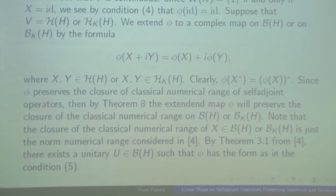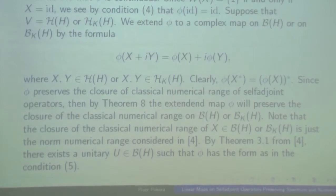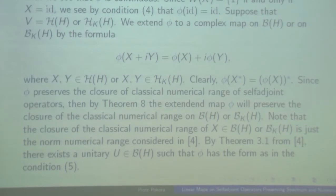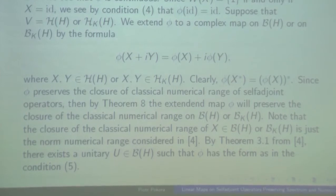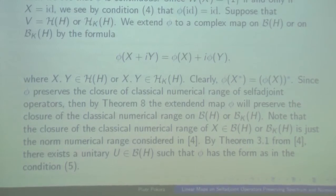By theorem number 8, we observe that phi preserves the closure of the classical numerical range on the spaces of B(H) and T(H). Now we would like to use the theorem of Pellegrini from 1975. I should mention that the classical numerical range is the same as the norm of the numerical range as defined in that paper, since the numerical range can be defined in a C*-algebra and in our case the two definitions coincide. Using Pellegrini's theorem, we know that phi must be a Jordan automorphism, and using the fact that phi is symmetric, we can apply the tradition theorem. This completes the proof.